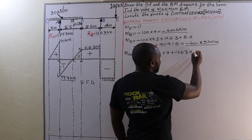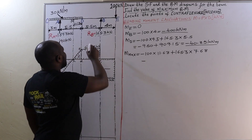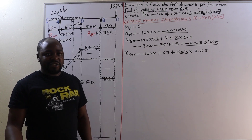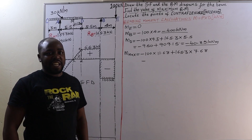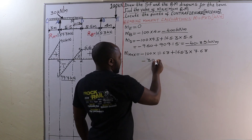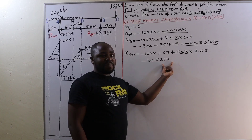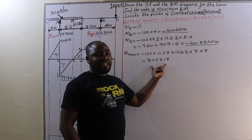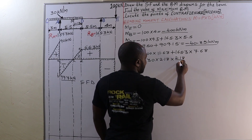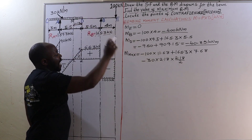Between point D and the point of maximum bending moment we have a uniformly distributed load of 30 kilo-Newtons per meter over a span of 2.18 meters. We multiply the UDL by the span to convert it to a point load, and then multiply by half that span (2.18 divided by 2), since the equivalent point load acts at the midpoint between D and M.